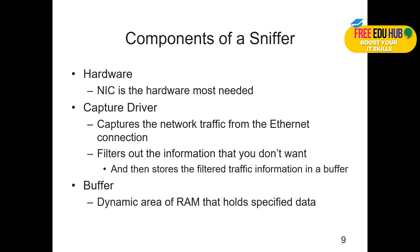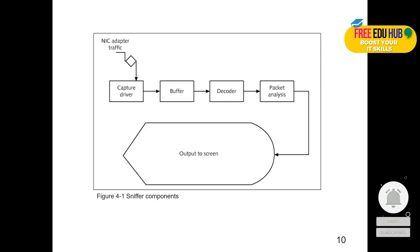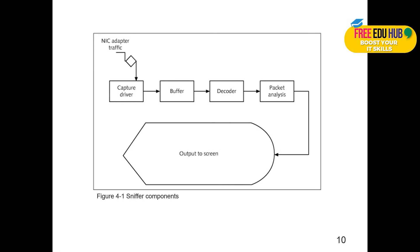That's why we use these websites to decrypt the traffic and read what's written in it. The hardware NIC is the hardware most needed. The capture driver captures the network traffic from the Ethernet connection, filters out information you don't want, and stores the filtered traffic in a buffer — a dynamic area that holds the data. The NIC adapter traffic is captured by the capture driver, goes to the buffer, then the traffic is decoded, followed by packet analysis, and the output is displayed.